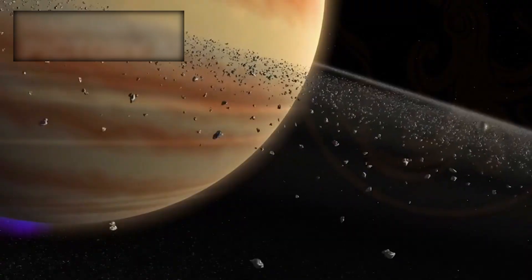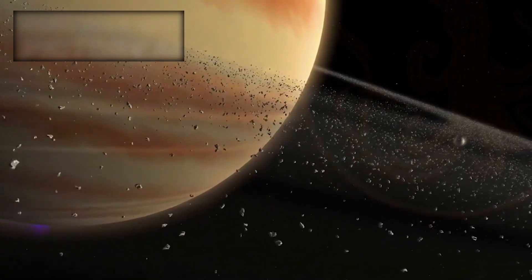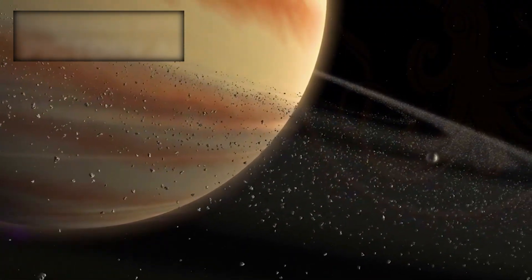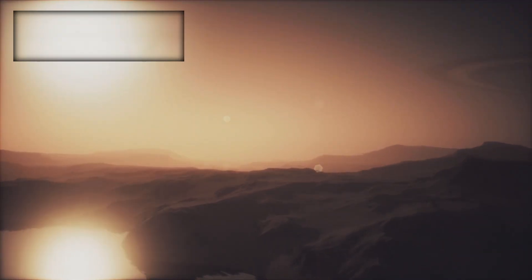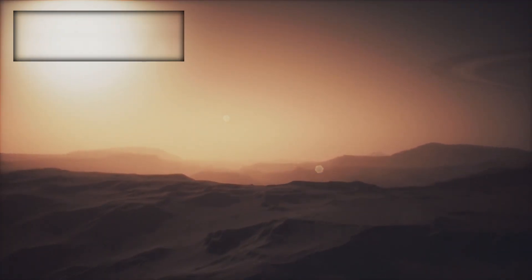Then came Saturn, where Voyager 1 revealed the breathtaking complexity of its rings and the bizarre atmospheres of its moons. Titan, in particular, drew attention with its thick orange haze, hinting at a world rich in organic chemistry.